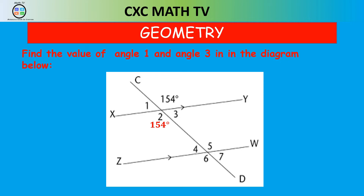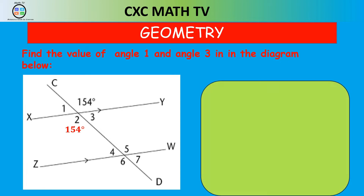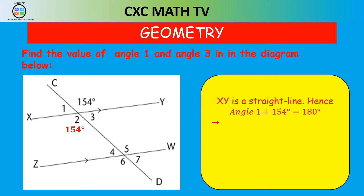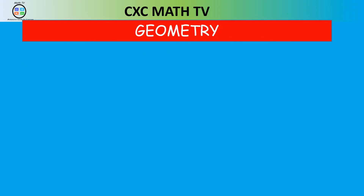XY is a straight line, so angle 1 plus 154 equals 180. Transposing, angle 1 is 26 degrees. Once we get angle 1 as 26 degrees, angle 3 is also equal to angle 1 by vertically opposite angles — or you can see that CD is another straight line. So angle 1 and angle 3 are both 26 degrees.